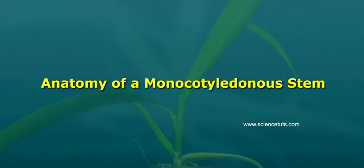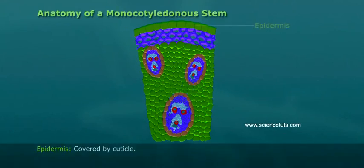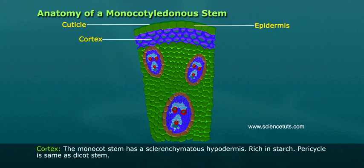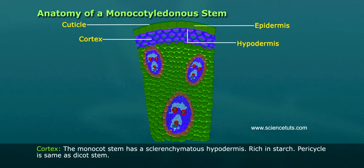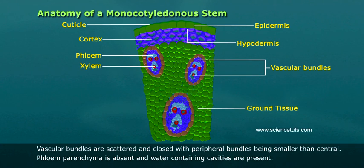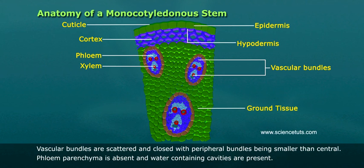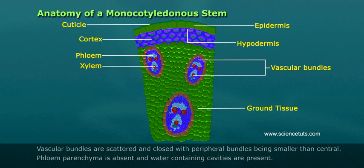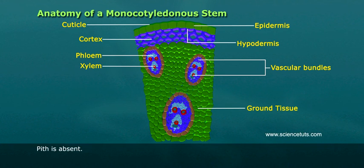Anatomy of a monocotyledonous stem. Epidermis is covered by cuticle. The monocot stem has a sclerenchymeter's hypodermis. Pericycle is same as dicot stem. Vascular bundles are scattered and closed, with peripheral bundles being smaller than central. Phloem parenchyma is absent and water-containing cavities are present. Pith is absent.